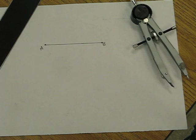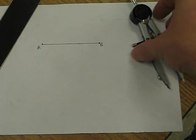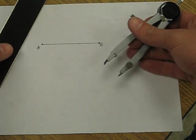In this construction we're going to learn how to construct a perpendicular bisector of a segment. Again, you'll need your compass and a straight edge.